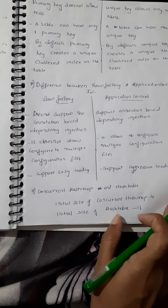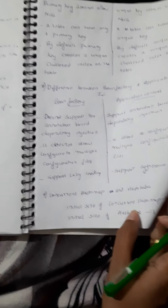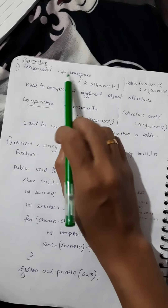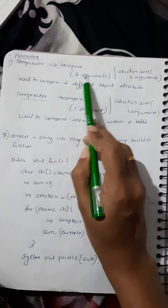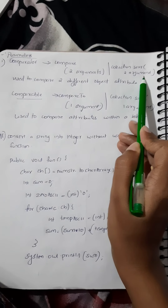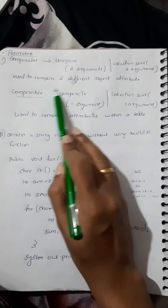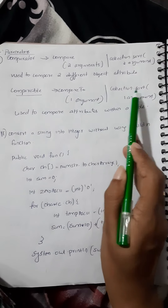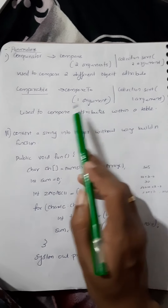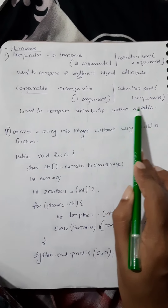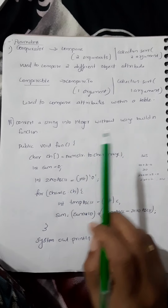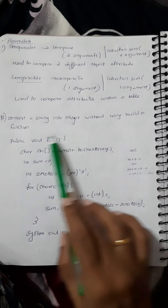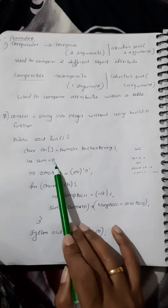In this case, BeanFactory and ApplicationContext can be used with eager loading. You can compare two parameters. If you want to compare two parameters, you can compare them in a single table with one argument.